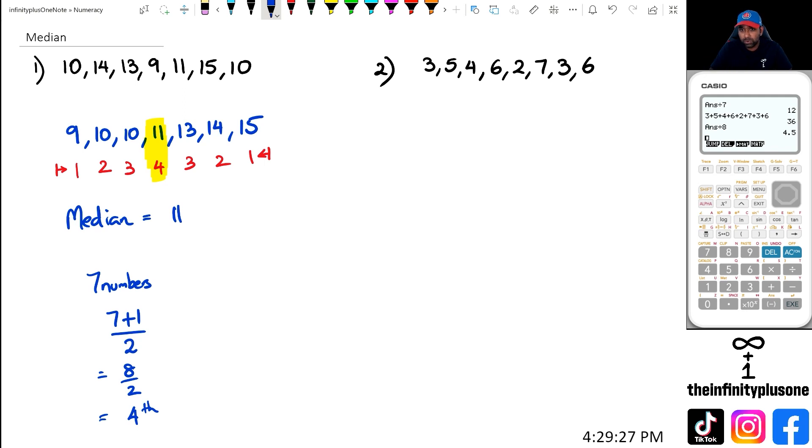But what happens when you get even numbers? Let's have a look at question two here. With question two, we've got even numbers, rules don't change, we still have to write it from smallest to largest. So we've got 2, we've got two 3s, we've got a 4, a 5, 6, 6, and 7.